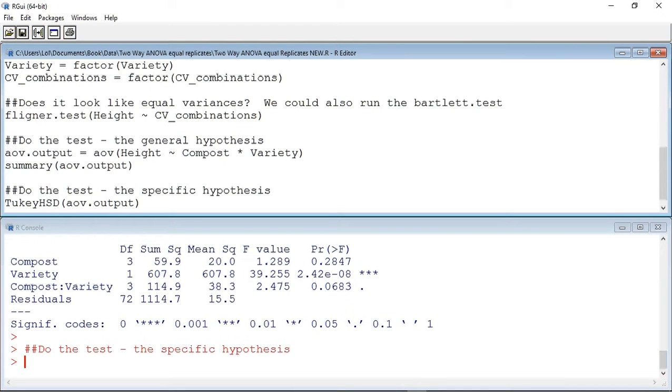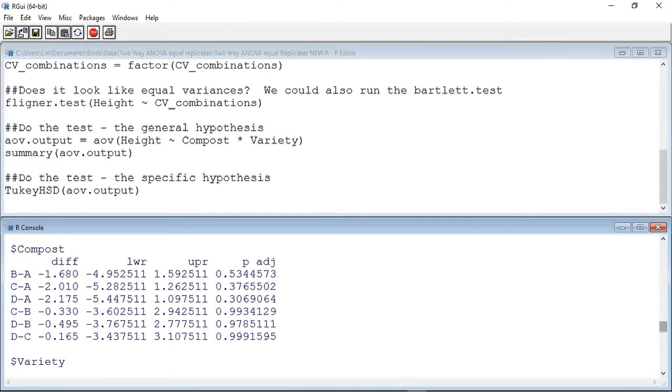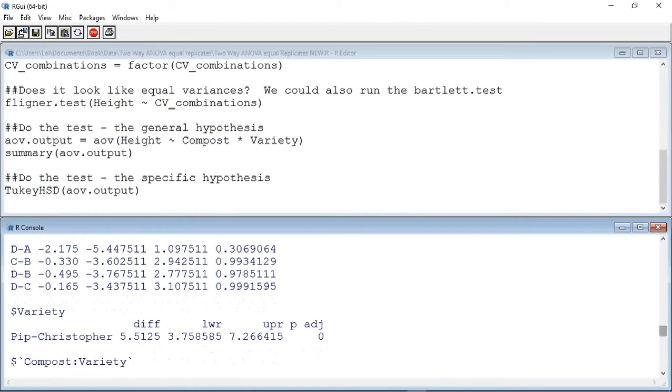We get three tables. The first table tells us which composts are significantly different from each other. We already know from the ANOVA that there isn't a significant difference, and it's quite refreshing to see that all the p-values are above 0.05.